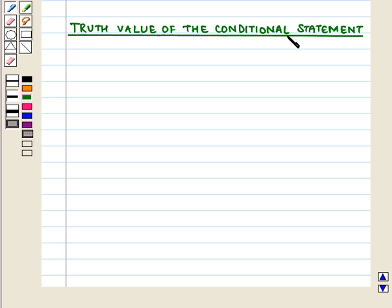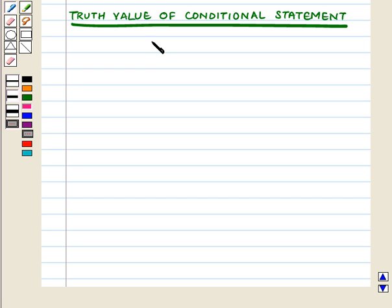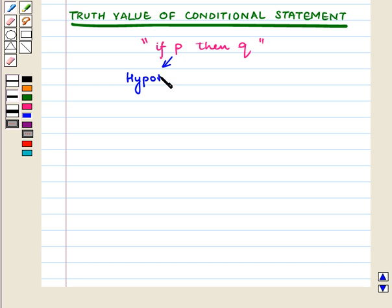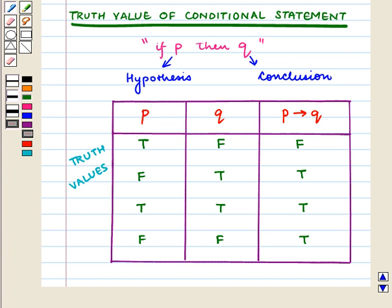Now let us find the truth value of the conditional statement. In the conditional statement 'if P then Q', P is the hypothesis and Q is the conclusion. If P is true and Q is false, then P implies Q is false. If P is false and Q is true, then P implies Q is true.